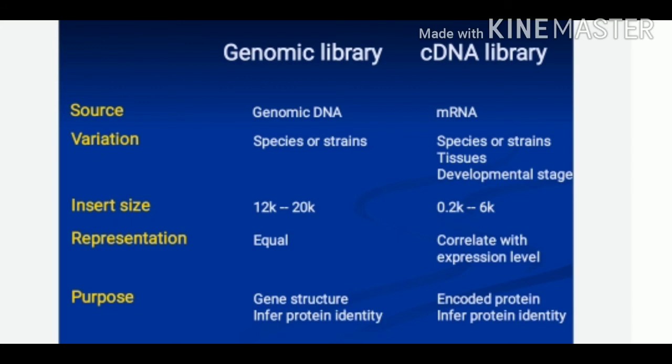Focusing on the differences between a genomic library and a cDNA library: the source is genomic DNA in the case of a genomic library, whereas it is mRNA in the case of a cDNA library. The genomic library shows variation at the level of species or strains, whereas in a cDNA library the variation can be seen at the level of species or strains, as well as tissues and developmental stages.